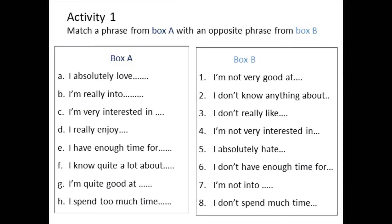Now let's look at Activity 1: match a phrase from Box A with an opposite phrase from Box B. Box A has items A to H and Box B has items 1 to 8. For example, 'I absolutely love' — the opposite is number 5: 'I absolutely hate.'